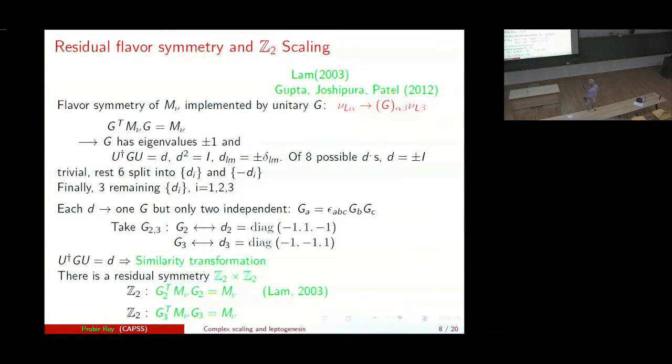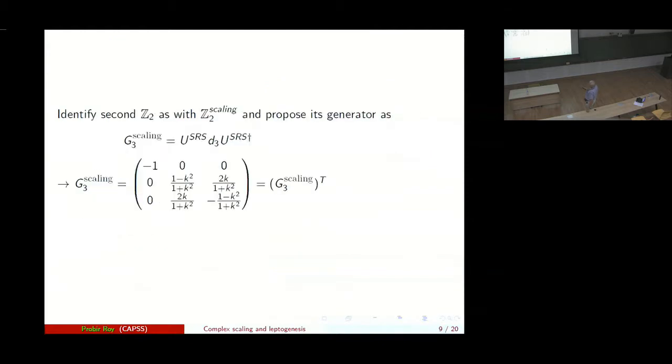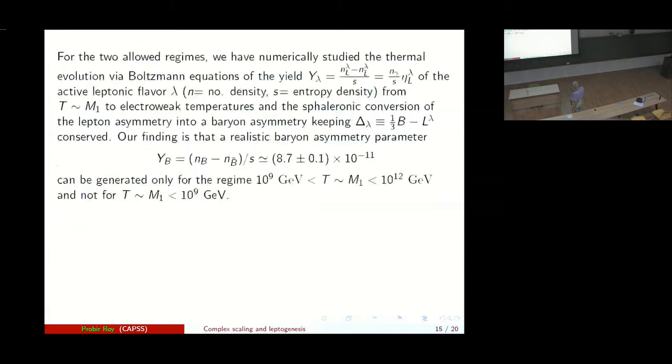So ultimately you have these two sets, G_2 and G_3, corresponding to G_2 and G_3 scaling. So there is a Z2 cross Z2 discrete residual symmetry. This was discovered by Lam in 2003 and that's called the residual flavor symmetry of the neutrino mass matrix. Now we identify, our job comes at this point, we identify this residual symmetry Z2 scaling with G_3 scaling.